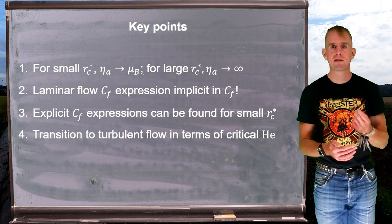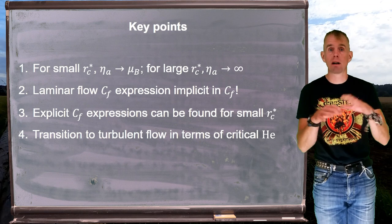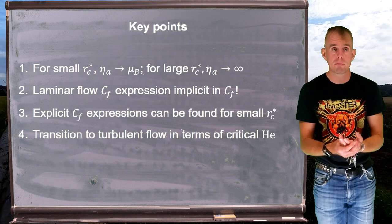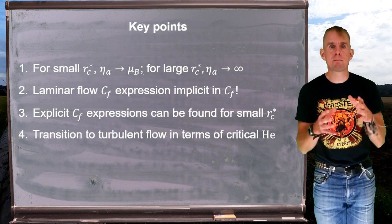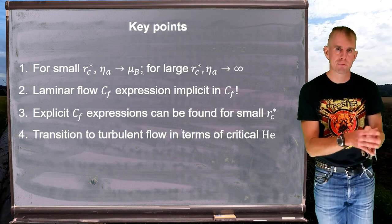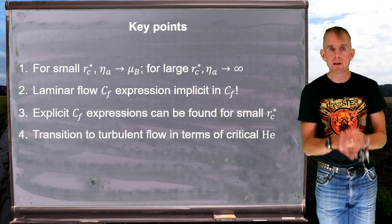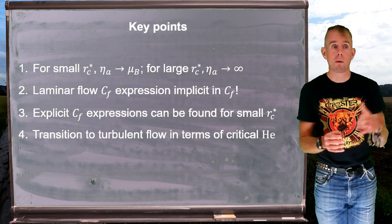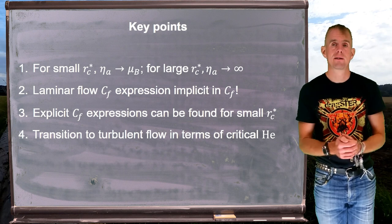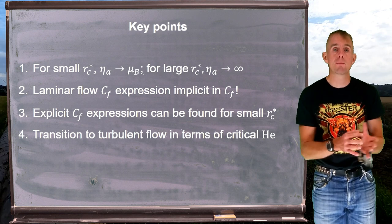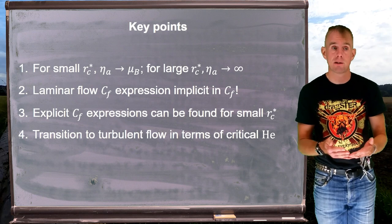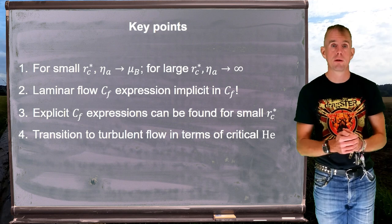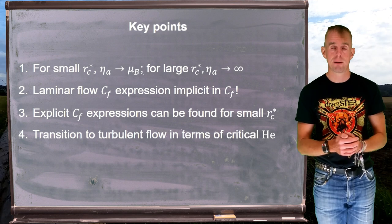We also found that if we make some assumptions about how big R_C* is — specifically ignoring higher order terms — we can produce an explicit expression for friction factor. We also briefly examined the limit of laminar flow, needing to know when we can apply those friction factor expressions and when we have to look in the literature for something else. So we looked at the laminar-turbulent flow transition in terms of another new non-dimensional number: the Hedstrom number.